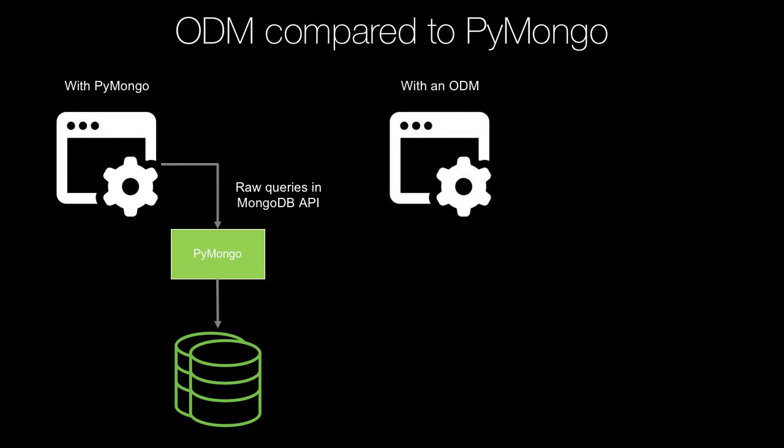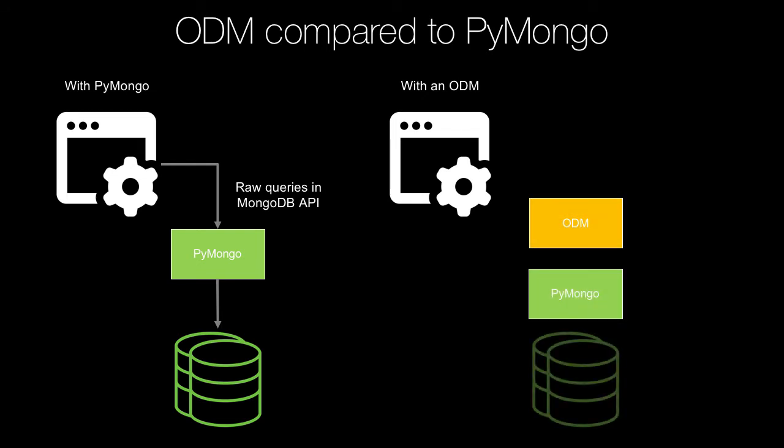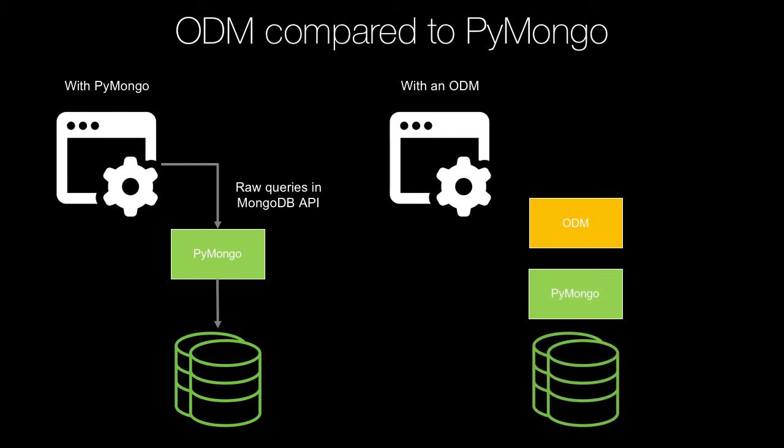With an ODM, we've got our app, PyMongo, and MongoDB, but we also have another layer we directly interact with called the ODM, Object Document Mapper. There are a bunch of different kinds: MongoEngine, Ming, MongoKit, MongoAlchemy, MiniMongo, and more. It just so happens we're going to use MongoEngine, one of the more popular and well-polished ones.